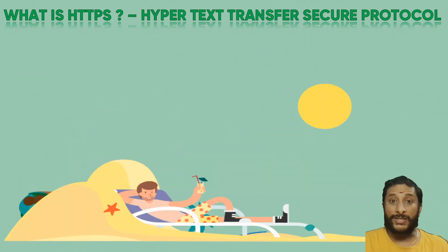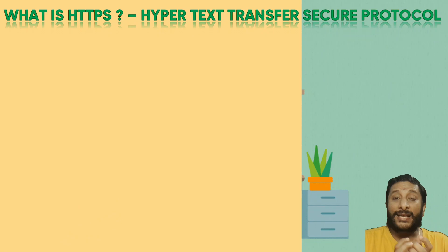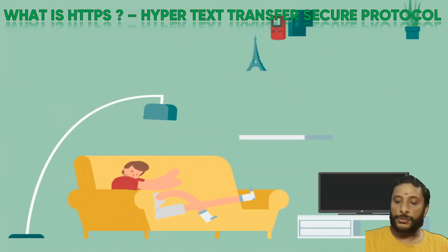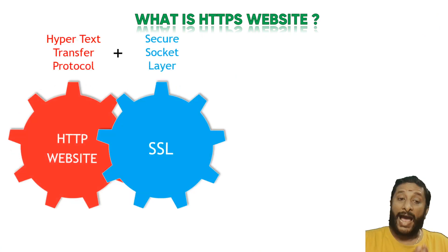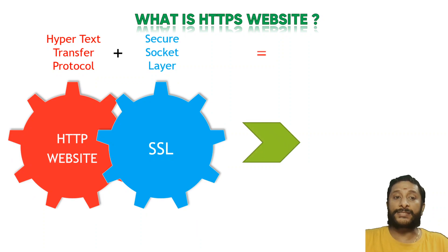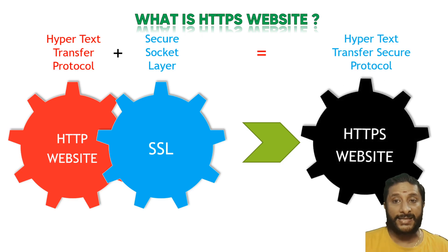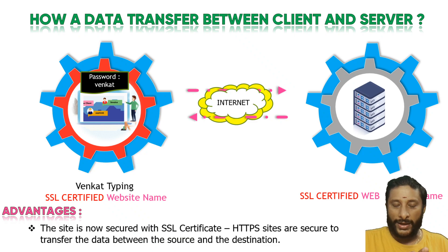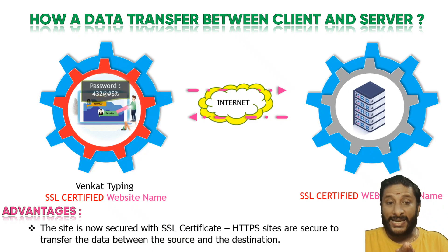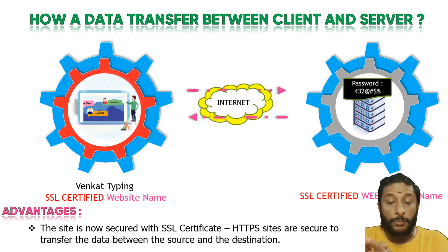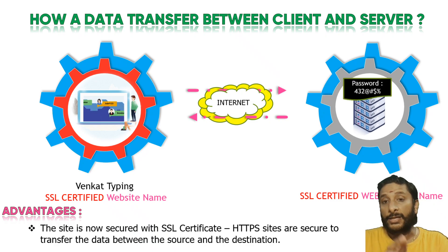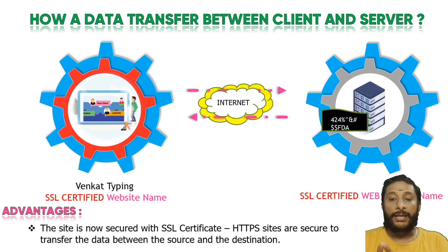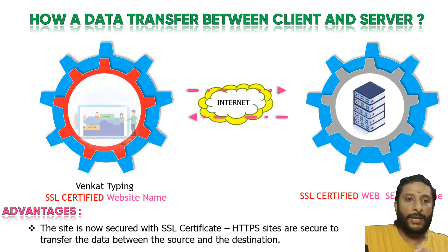HTTPS is Hypertext Transfer Secure Protocol. Passwords and all data are encrypted so that no one can access it. HTTP is combined with SSL — Secure Socket Layer — and it becomes the great technology called HTTPS. The data is encrypted, so no one can see it. For example, the password 'Venkat' is encrypted before being transferred, and no one can find it while it's in transit.